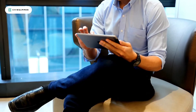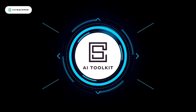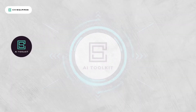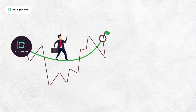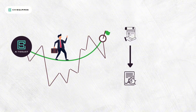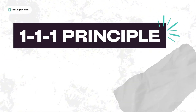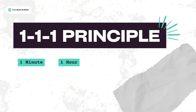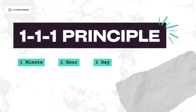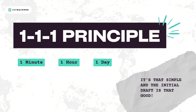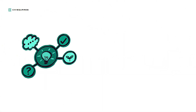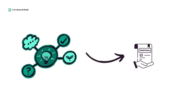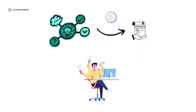What if it didn't have to be this hard or that slow? Enter the Chi-Squares AI Toolkit — your shortcut to success. From drafting proposals to creating consent forms, it does the heavy lifting for you. With our 1-1-1 principle: create a proposal in one minute, customize it in an hour, and get feedback from your team in a day. It's that simple, and the initial draft is that good. Watch your ideas turn into a professional proposal in seconds. Now that's efficiency.